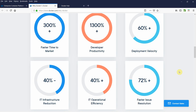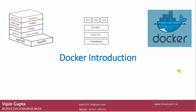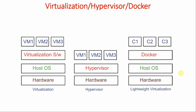Let's go into the detail of what Docker is. In the earlier video we discussed about virtualization and hypervisor. In virtualization, hardware is there — in my case i7, 16 GB RAM — then a host operating system (in my case Windows 10), then a virtualization software like VirtualBox or VMware Workstation, in which we created VM1, VM2, VM3. These VMs could be Windows or Linux.